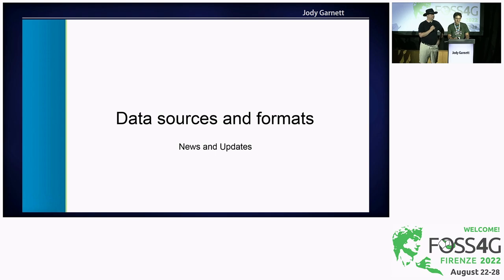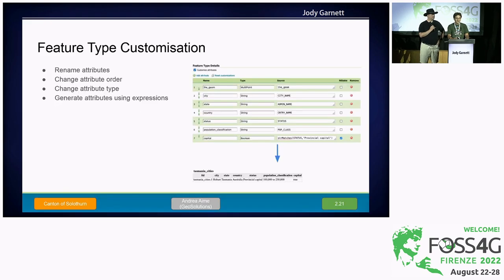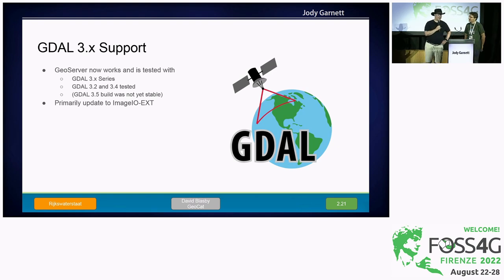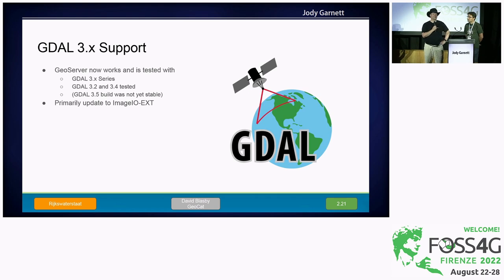In terms of data sources and formats, we have a new feature type customization — long needed — which lets you rename attributes, change the type, and add new attributes based on SQL expressions. GeoCat, on behalf of one of our customers, managed to upgrade to GDAL 3 support. GDAL 3 has been out for some time, but we don't get compatibility with the latest GDAL unless we have funding to test and make sure it works.